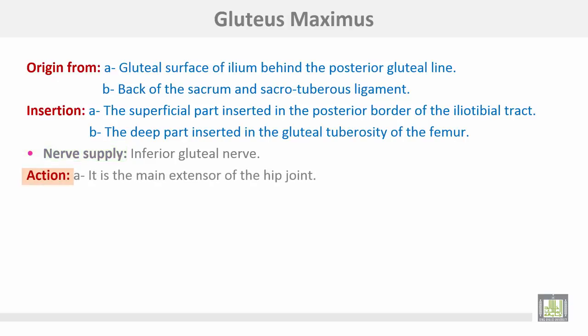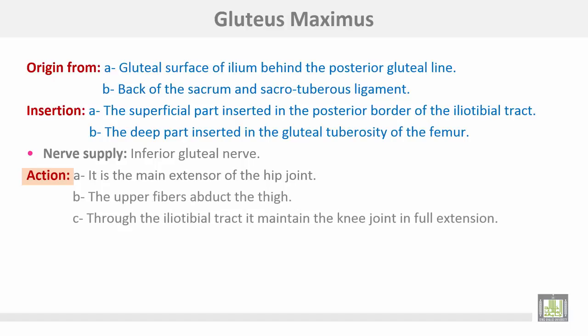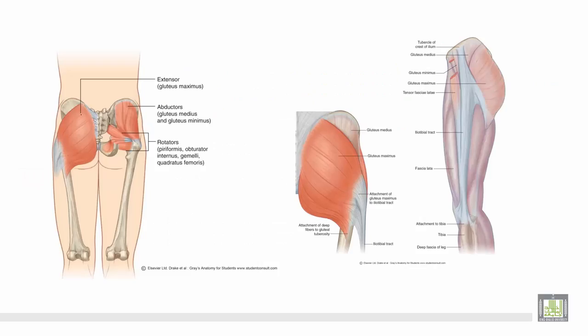Action: gluteus maximus is the main extensor of the hip joint. The upper fibers abduct the thigh. Through the iliotibial tract, it maintains the knee joint in full extension. This is the gluteus maximus muscle inserted into the posterior border of the iliotibial tract.